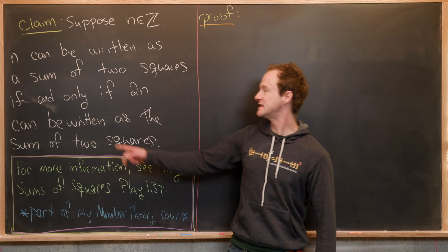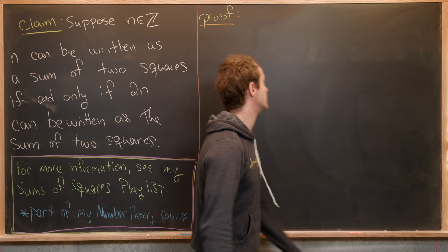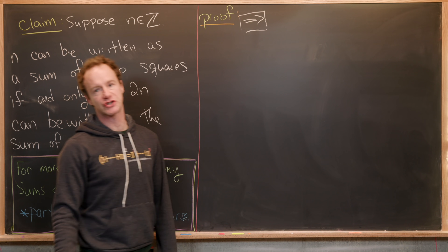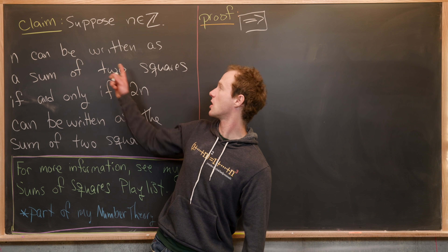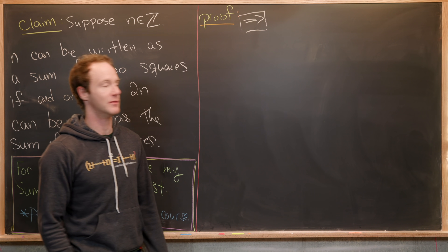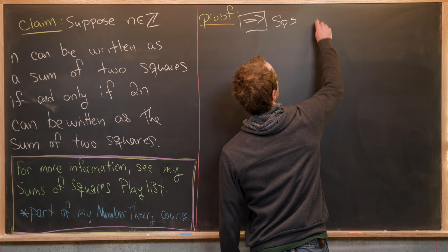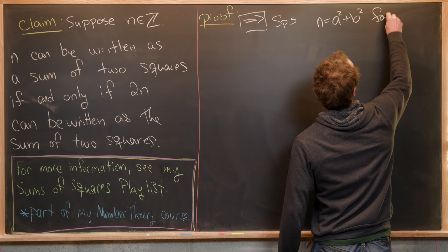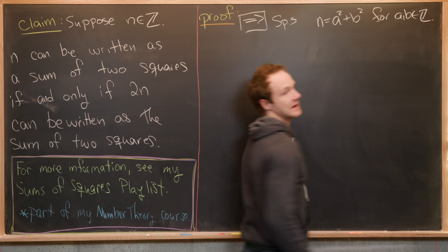Notice that this is an if-and-only-if statement, so that means we have two things to prove. Let's go ahead and prove the forward direction first. We want to assume that n can be written as the sum of two squares, so we'll suppose that n equals a squared plus b squared for some integers a and b.